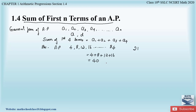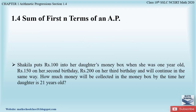There is a similar example in the textbook: Shakila puts ₹100 into her daughter's money box when she was one year old, ₹150 on her second birthday, ₹200 on her third birthday, and continues in the same way. How much money will be collected in the money box by the time her daughter is 21 years old? Since the common difference is 50, we need to find all terms up to the 21st and add them together.